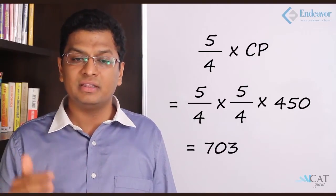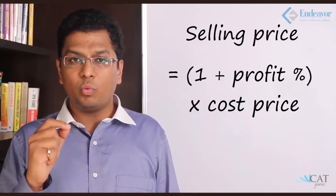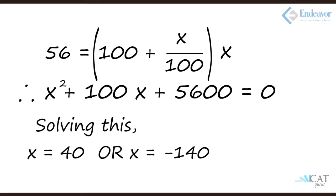That comes to approximately 703 rupees. Next: Rajiv sold an article for 56 rupees which cost him x rupees. If he gained x percent on his outlay, what was his cost? Using SP = (1 + x/100) × x, we get: 56 = x(1 + x/100), which simplifies to x² + 100x − 5600 = 0. Solving gives two options: 40 and −140. Since cost price cannot be negative, the cost price is 40 rupees and the profit percentage is also 40%.